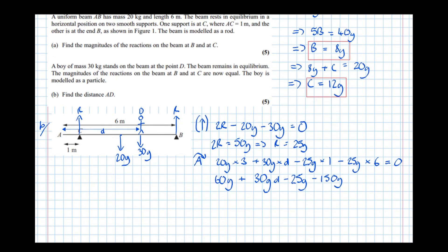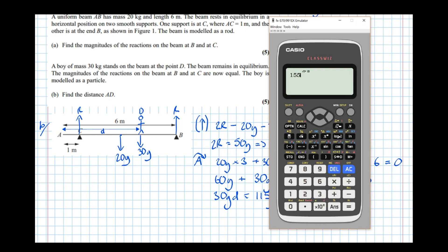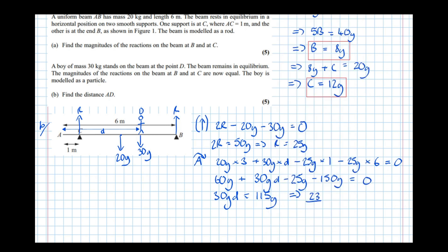Taking that all over the other side, we get 30GD equals - so it's 175 take 60 is 115 - G. Then divide by 30G, we'll get, so 115 divided by 30 is 23 over 6. 23 over 6 meters.